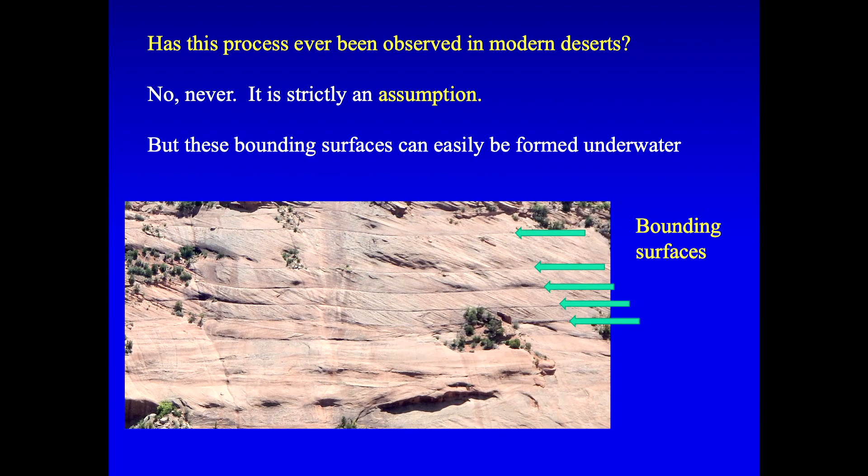So that's the published theory of how this happens. There's one basic problem in this. Well, they desperately need that process to make these bounding surfaces. Because you can see they're very prominent in these crossbed sandstones. The problem is, this has never been, ever been observed in modern sand dunes. I mean, nowhere. There are lots of deserts around the world. And this has never been observed.